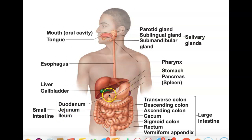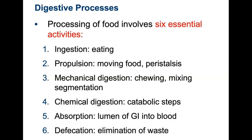Starting at the stomach, we go to the duodenum, then into the jejunum, then the ileum. From the ileum, we flow into the cecum, which is part of the large intestine. Then we go to the ascending colon, transverse colon, descending colon, sigmoid colon (which has an S shape), then the rectum, anal canal, and anus. Review the six essential activities: ingestion, propulsion, mechanical digestion, chemical digestion, absorption, and defecation — and understand what organs are responsible for each.